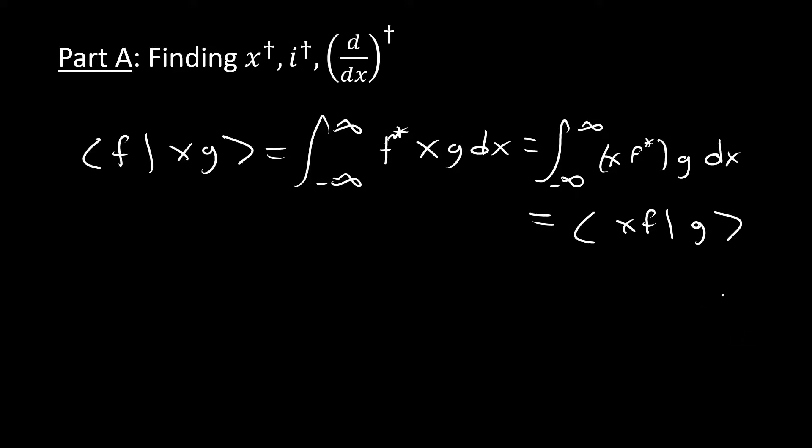And we can recall from our complex analysis that if we have some complex number z equals x plus i y, then z star equals x minus i y. We just change the sign of our complex number. And in the case of x, x is only real value. So it's a function that's only real value, there's no imaginary part to it. So taking the complex conjugate isn't going to change anything.